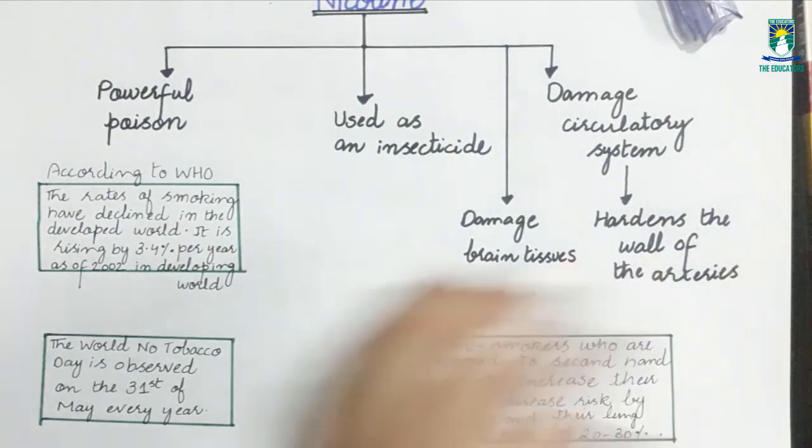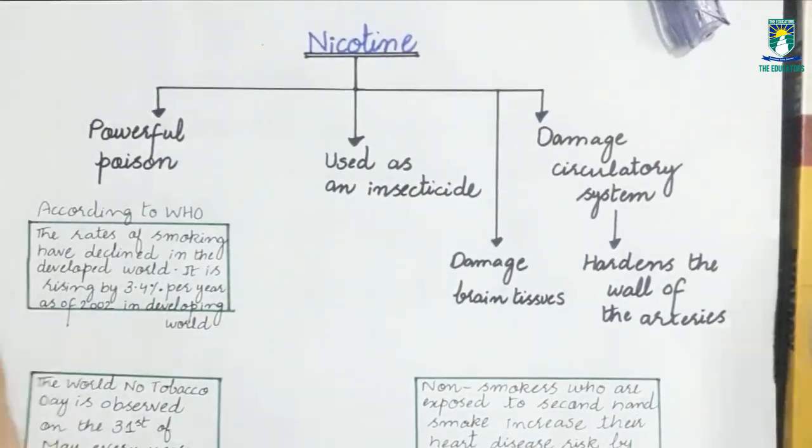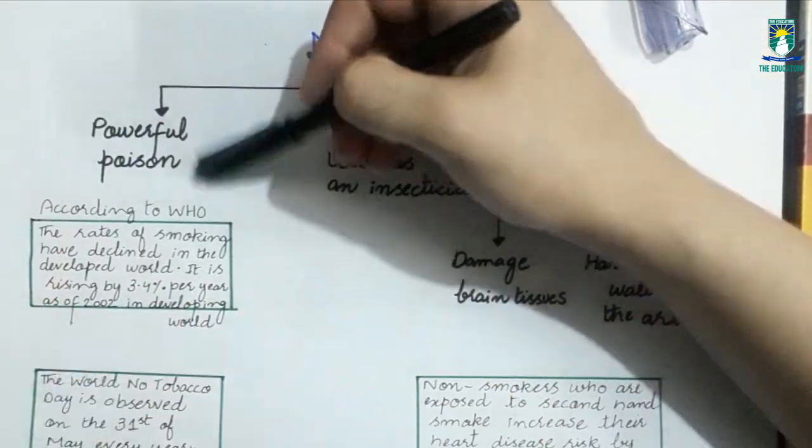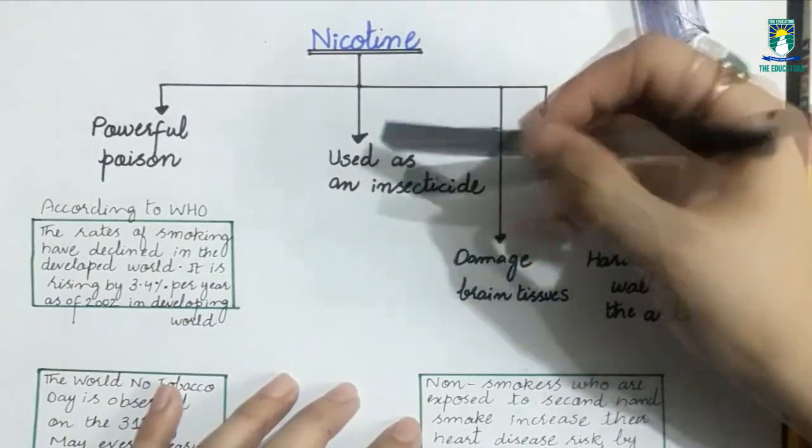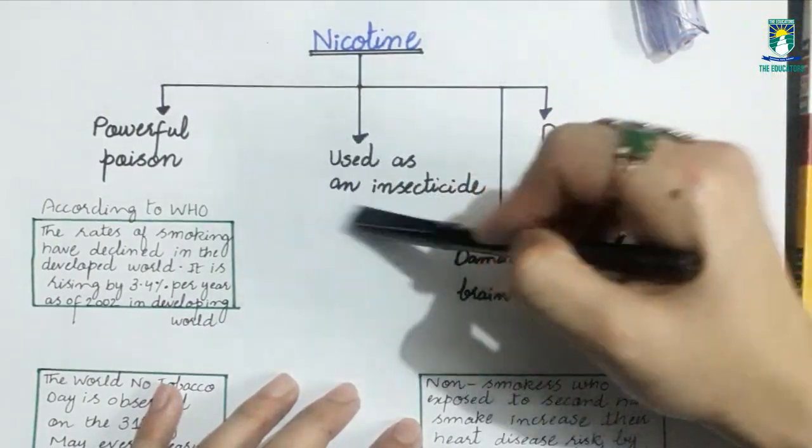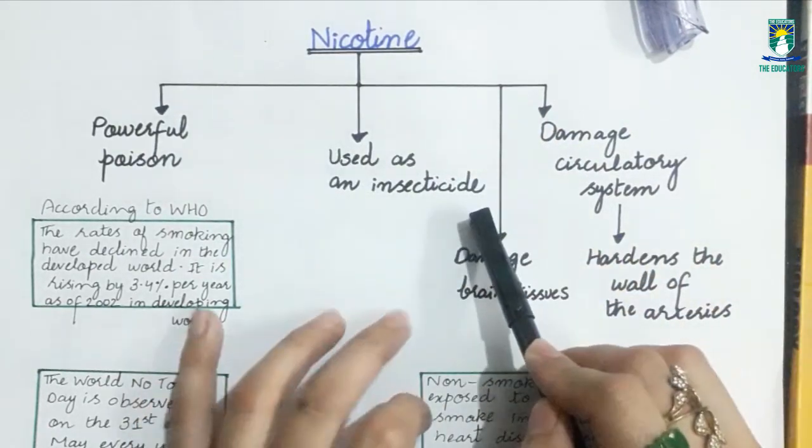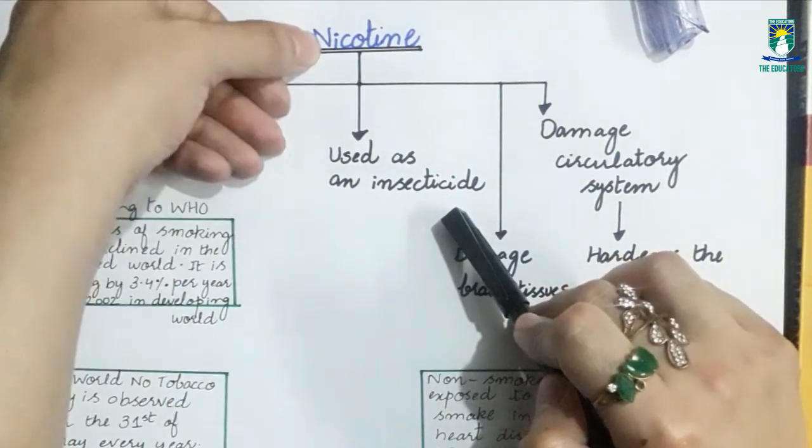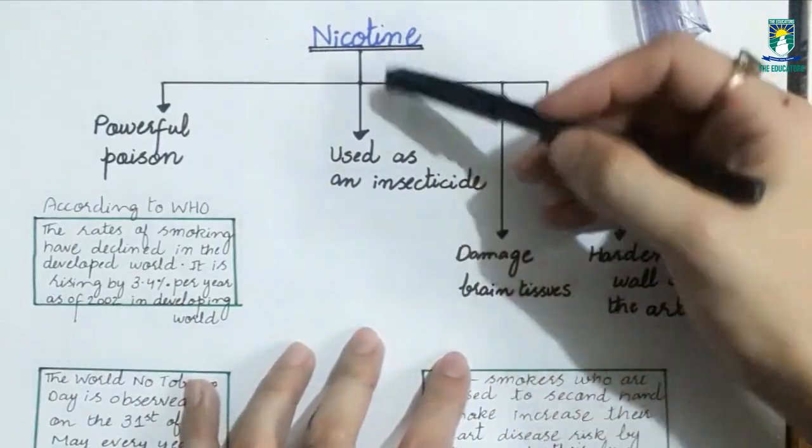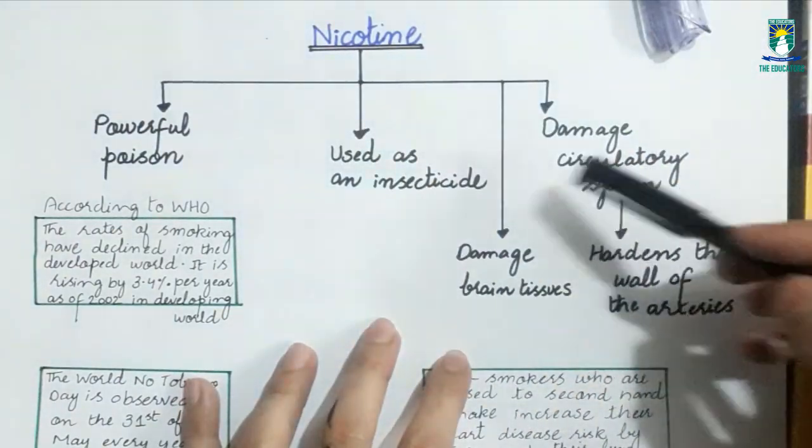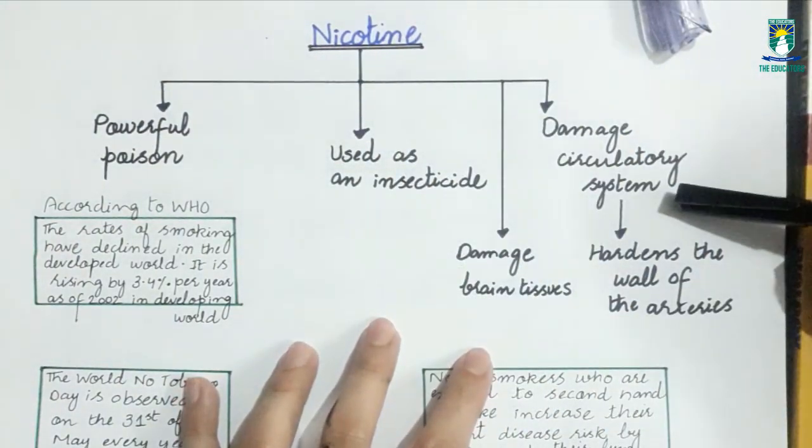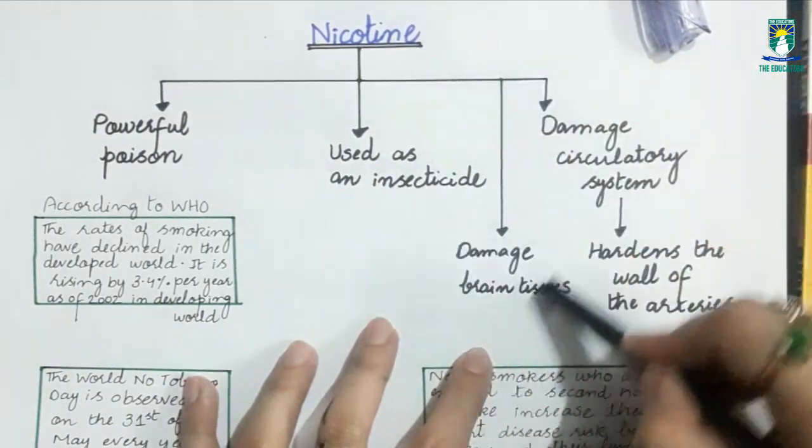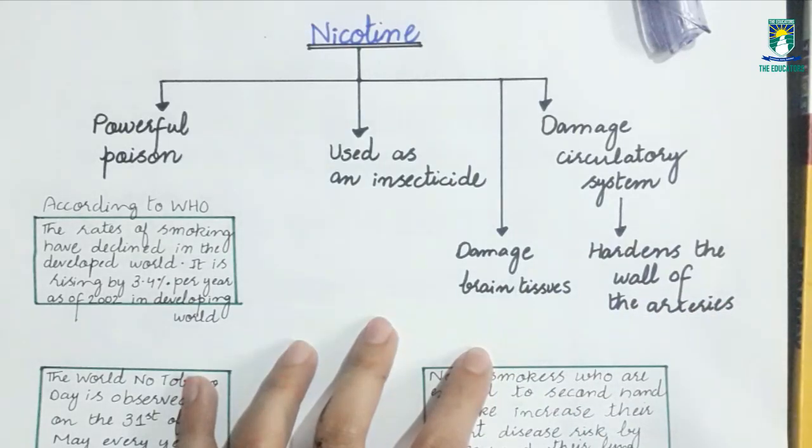Now we will discuss nicotine. What is nicotine? Basically, nicotine is a powerful poison that was used in the past as an insecticide to kill insects that damage crops. But nicotine is also present in cigarette smoke. If you inhale nicotine through cigarette smoke, it can damage your circulatory system including the walls of arteries. It can also damage your brain tissues.